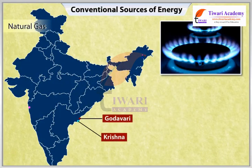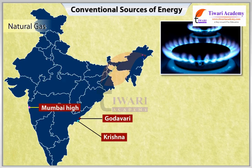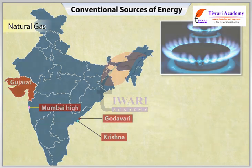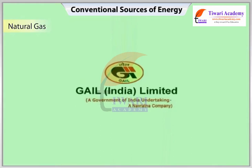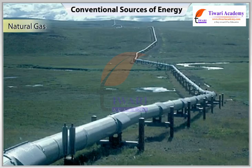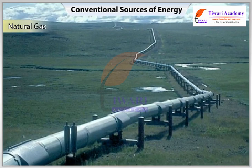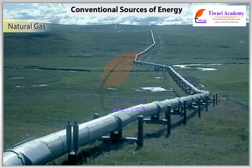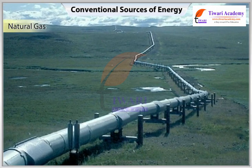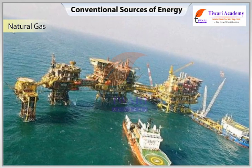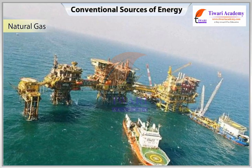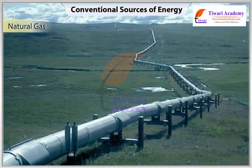Large reserves of natural gas have been discovered in the Krishna-Godavari basin. About 70% of India's reserves are found in the Mumbai High basin. Gujarat and Andaman and Nicobar Islands are also important areas. In 1986, GAIL was assigned to lay an approximately 1,800 km long, 18- to 36-inch diameter Hazira-Bijapur-Jagdishpur (HBJ) gas pipeline linking Mumbai High and basin with fertilizer, power, and industrial complexes in western and northern India, considerably improving India's gas production.